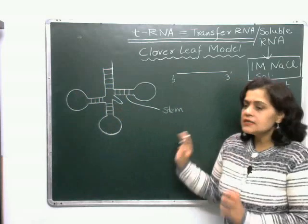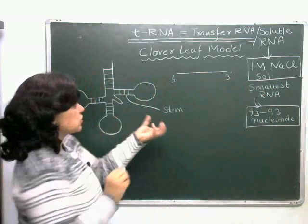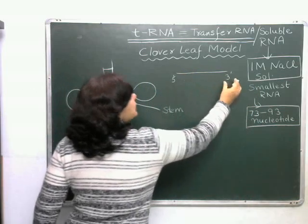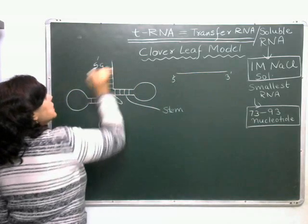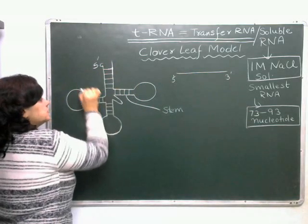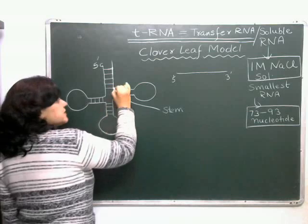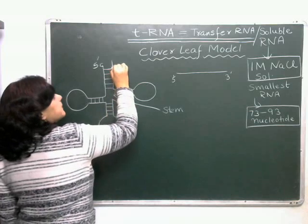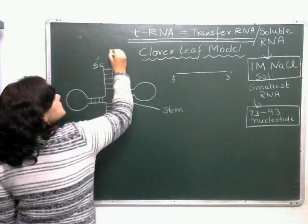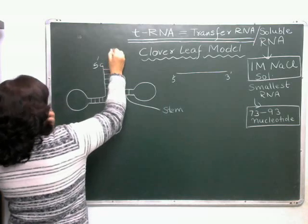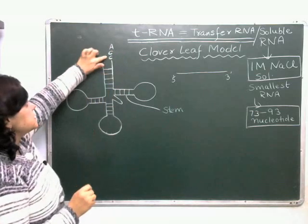Now, there is a 5' end and a 3' end. The 5' end always starts with a G. The cloverleaf resembles a clover leaf because it has three leaf-like loops. At the 3' end, there is a special sequence: C, C, A — reading from the 5' end — or A, C, C if reading from the 3' end.